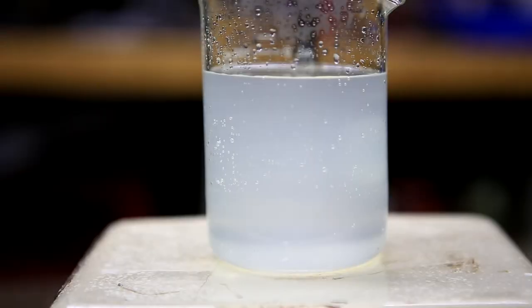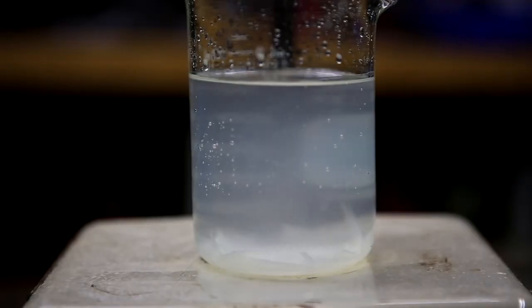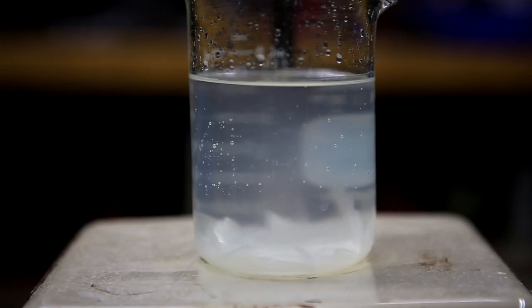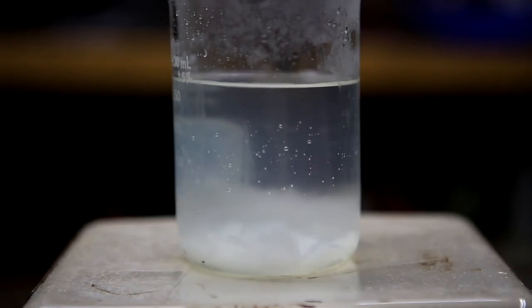The solution was allowed to cool to room temperature and potassium chlorate crystals began to form. Once the solution had reached room temperature the beaker was transferred to a freezer to precipitate out as much as possible.